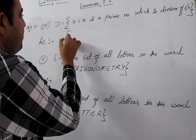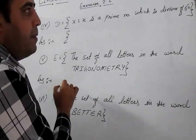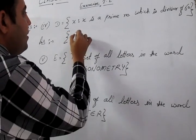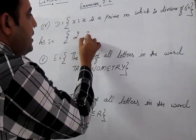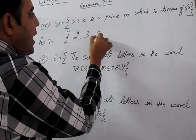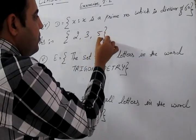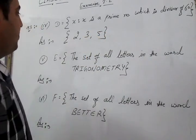Part D: the prime numbers are 2, 3, and 5.